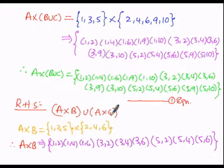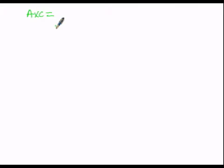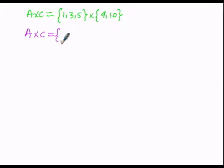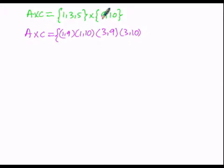Similarly, we find A cross C. A = {1, 3, 5} cross C = {9, 10}. So A cross C = {(1,9), (1,10), (3,9), (3,10), (5,9), (5,10)}. These are the elements of A cross C.